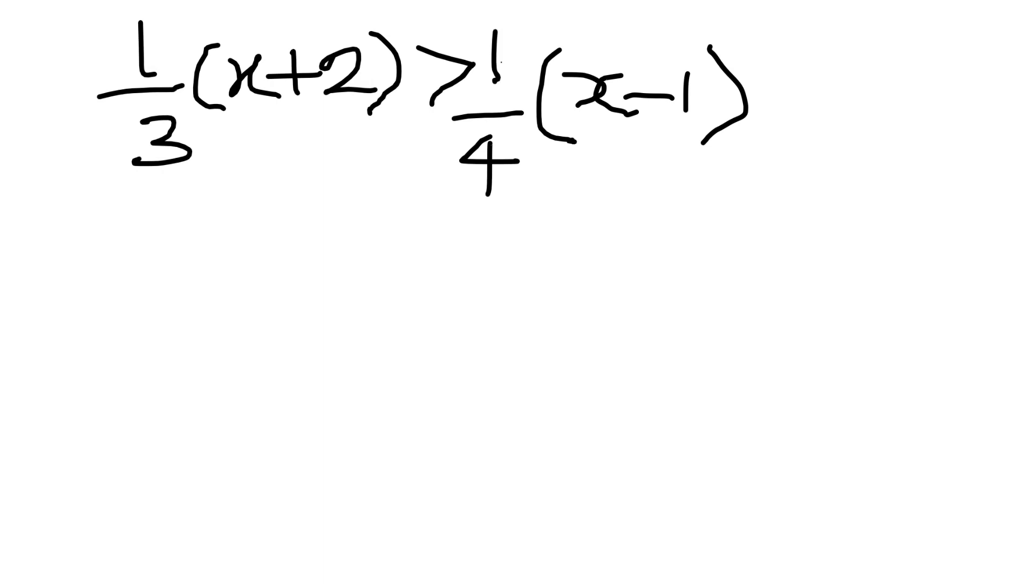And before we can do that, first of all, we have to find what we call the LCM. And since the denominators are not common, we will multiply the denominators to be our LCM. And when that happens, we're going to have our LCM to be equal to 12.